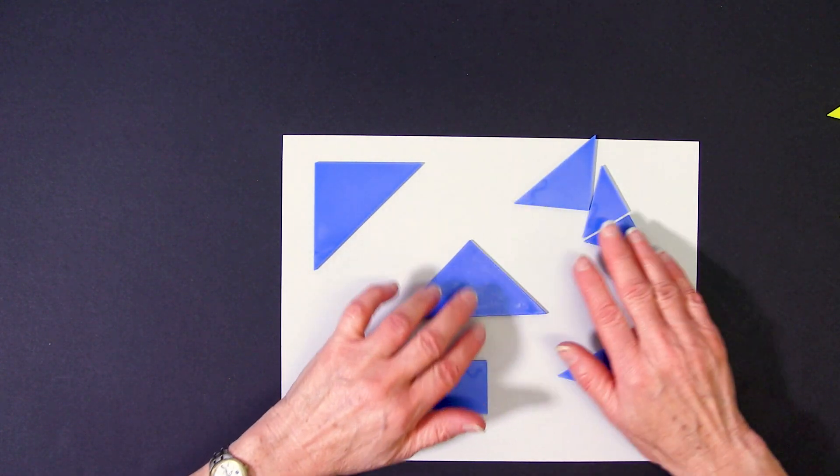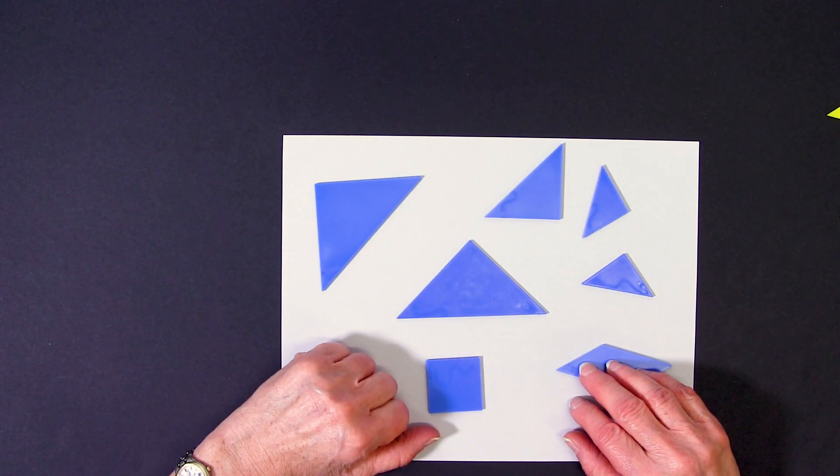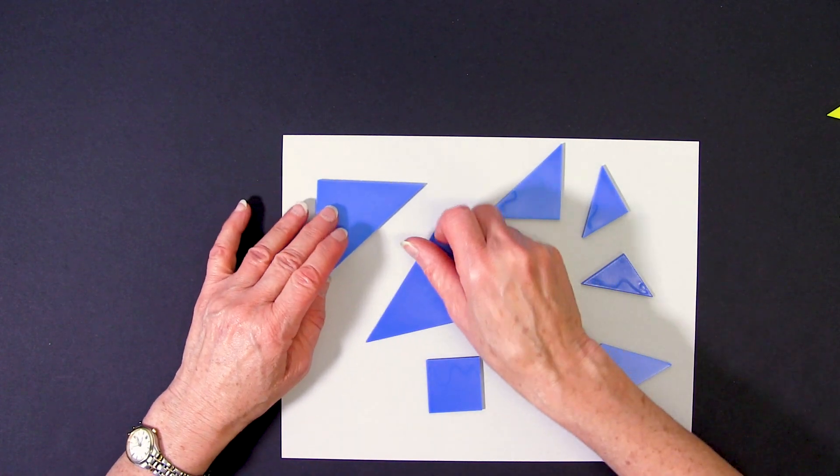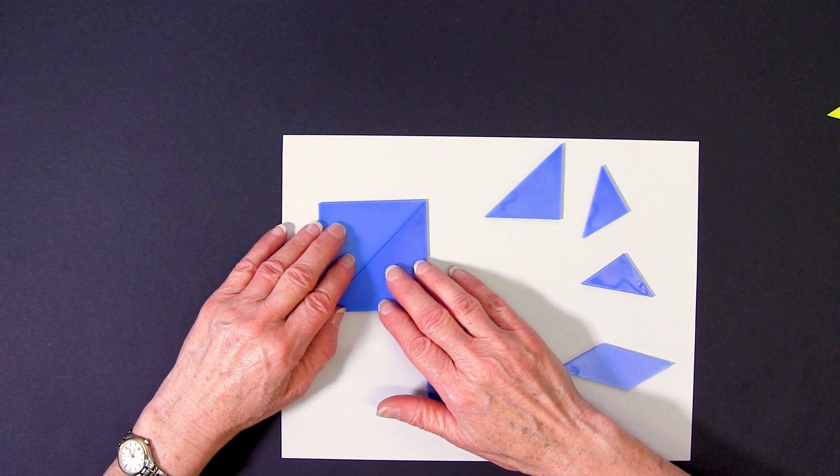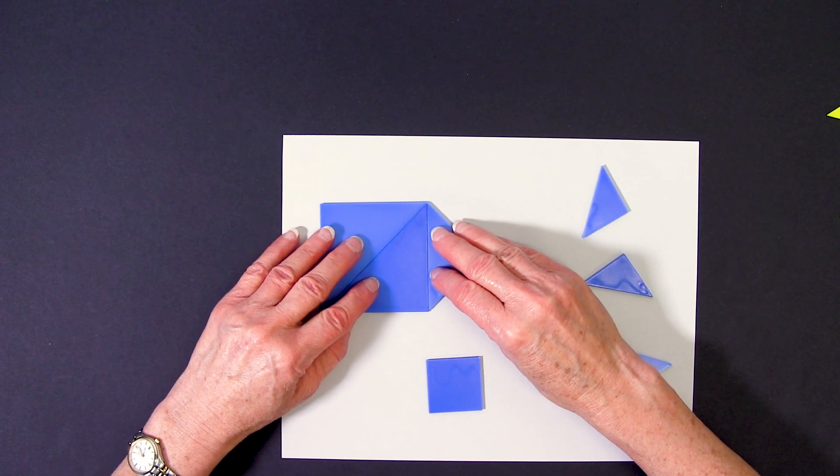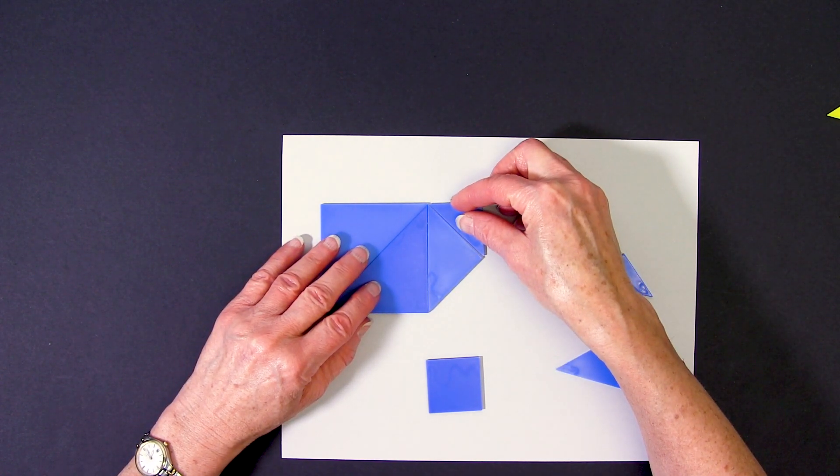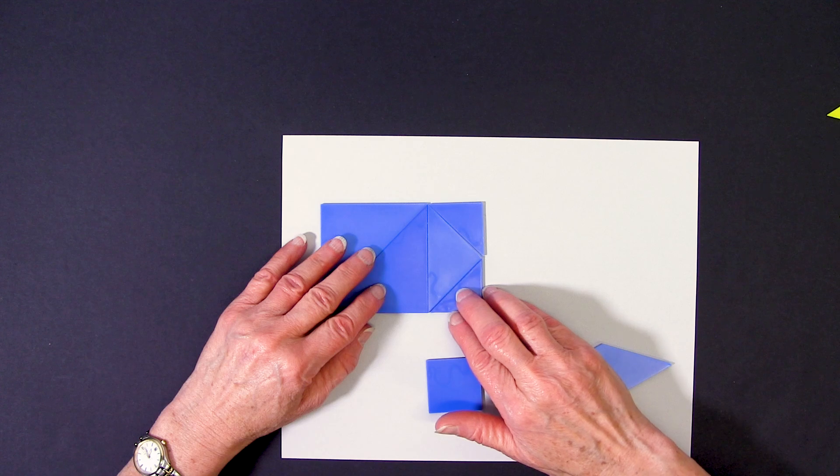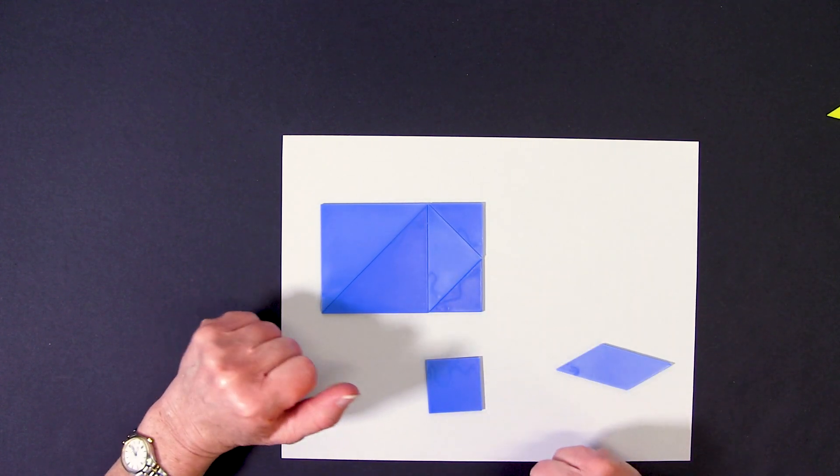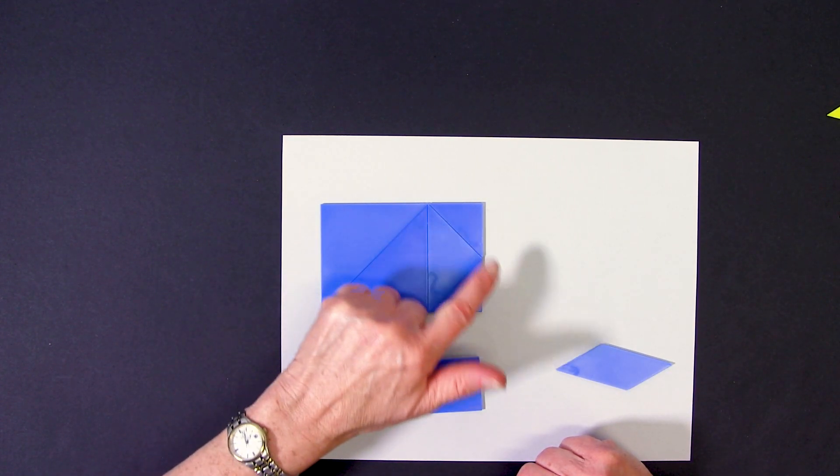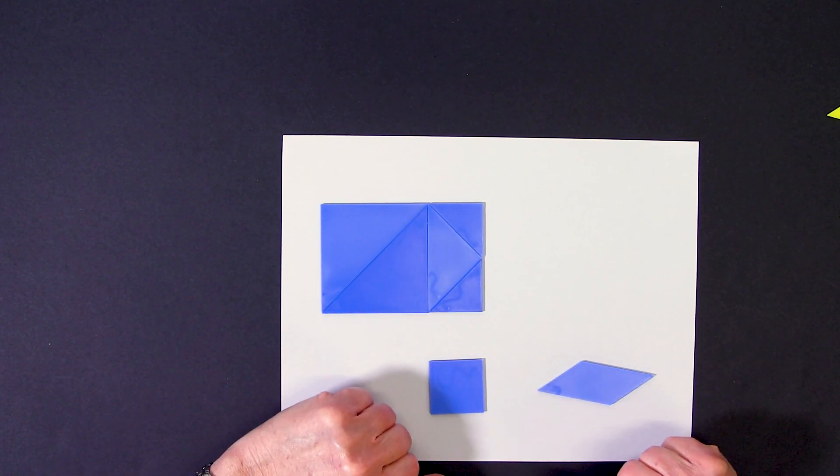Another way in which we like to use the tangram shapes is to create composite shapes. I can take the five triangles, arrange them in a certain way to create a quadrilateral, in this case a rectangle.